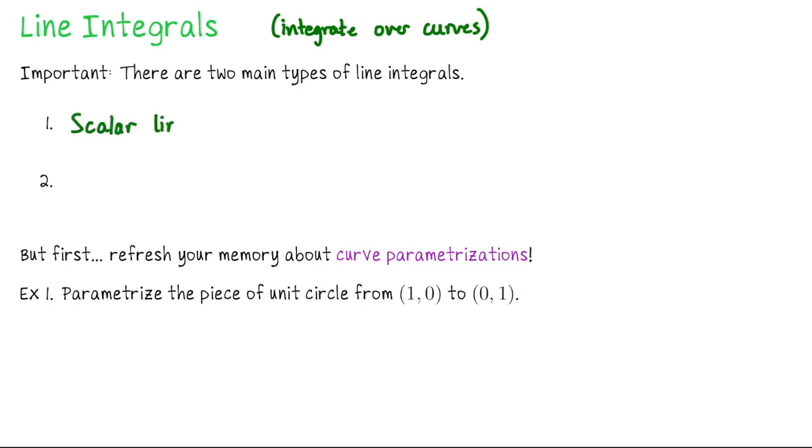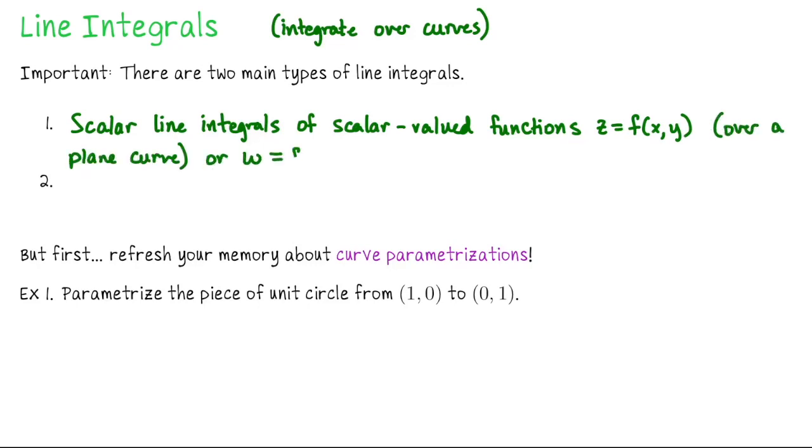The first type is called scalar line integral of scalar valued function, which could be f of x and y over a plane curve, or f of x, y, and z over a space curve.